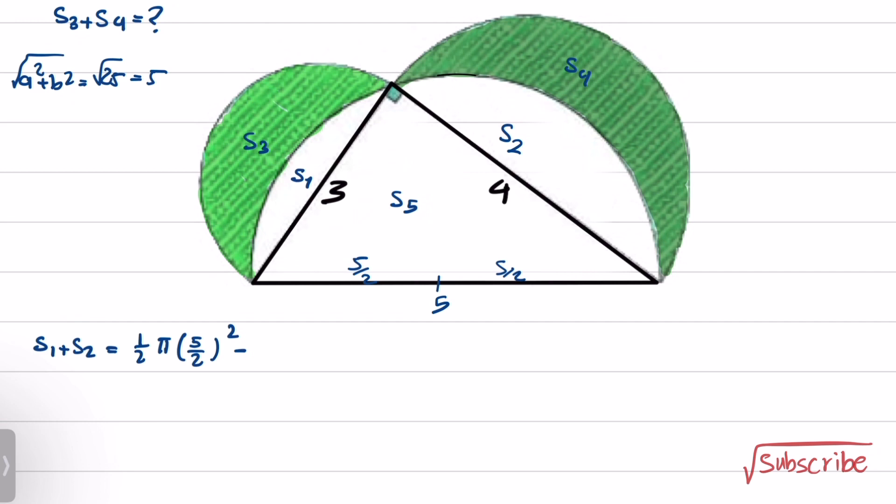The right triangle's area is 1/2 times 3 times 4. If you simplify this, you will get 1/2 π times 25/4 minus 6. You can further simplify this: 25π/8 minus 6 is the area of S1 and S2.